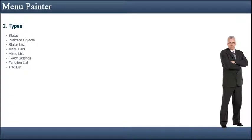Menu Painter has a number of types: Status, Interface Objects, Status List, Menu Bars, Menu List, F-key Settings, Function List, and Title List.